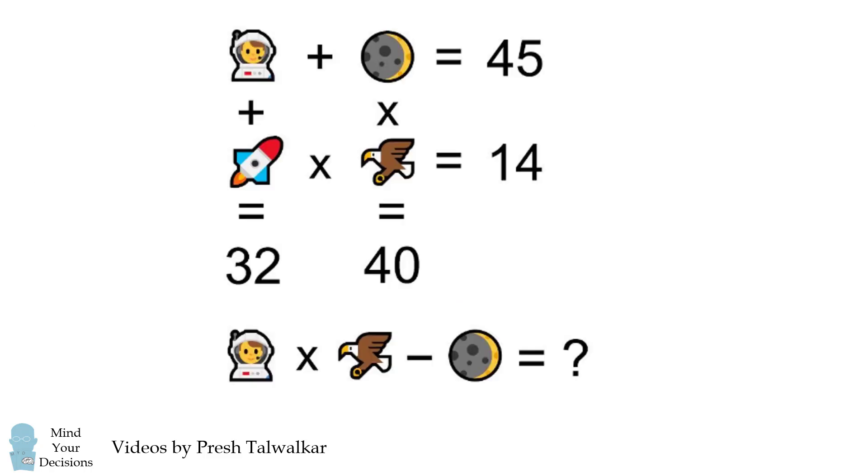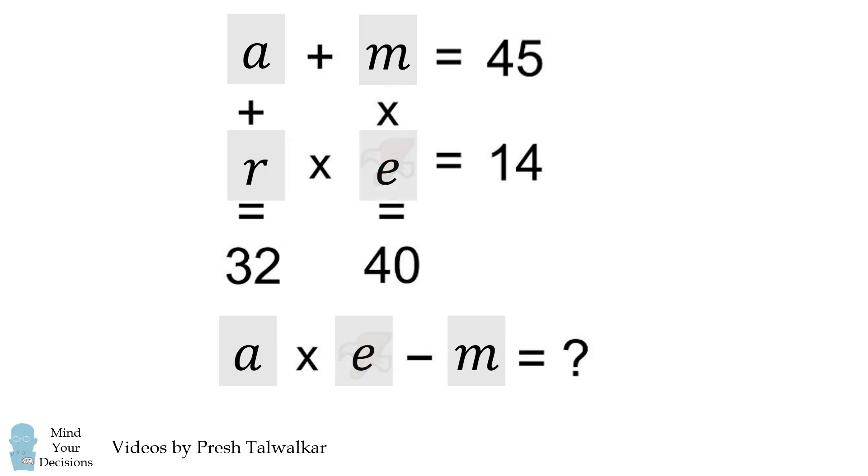So how can we solve NASA's puzzle? Let's first substitute letters for the emojis. We'll write a for astronaut, m for moon, r for rocket, and e for eagle.